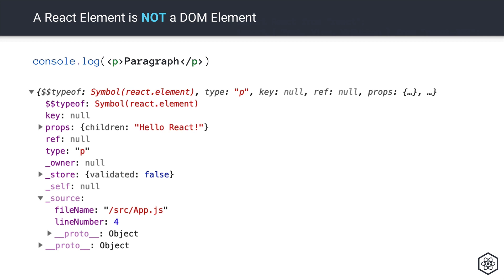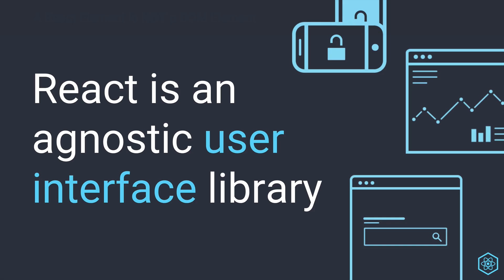For almost all intents and purposes, this won't really matter, but if you are used to working with DOM elements, you have to switch over to remembering that in React, an element is just a native JavaScript object, and eventually it will become DOM. But you can't always do everything with those objects that you can with DOM elements, and you could do a lot with React elements that you can't do with DOM elements. So to move on from the agnostic part, I want to point out again that React is a user interface library.